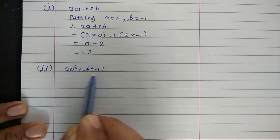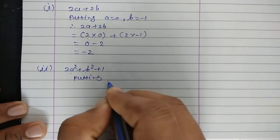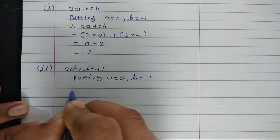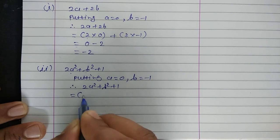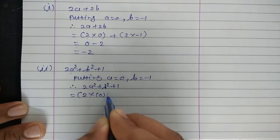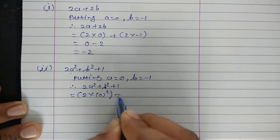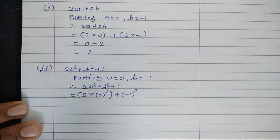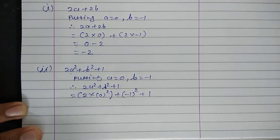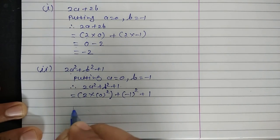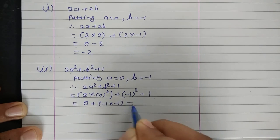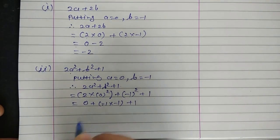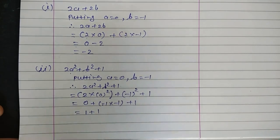Next expression: 2A square plus B square plus 1. Putting A is equal to 0, B is equal to minus 1. Therefore expression 2A square plus B square plus 1 equals 2 multiplied by 0 square, plus value of B that is minus 1 square, plus constant term 1. Minus 1 multiplied by minus 1 is plus 1. So 0 plus 1 plus 1 is 2. Answer is 2.